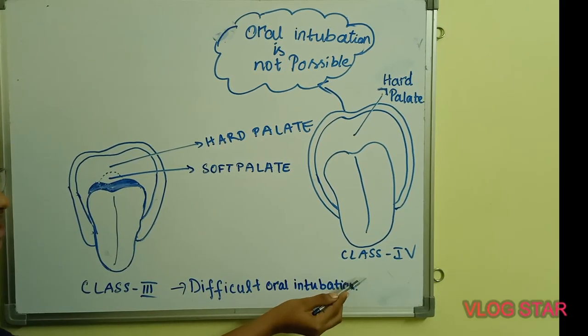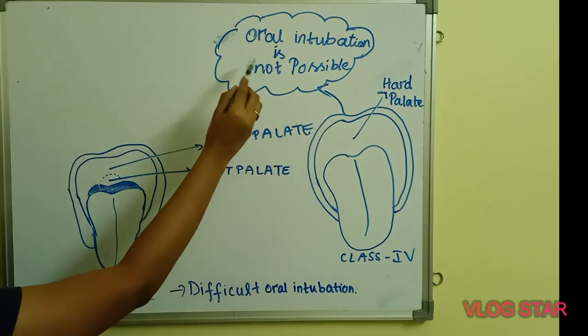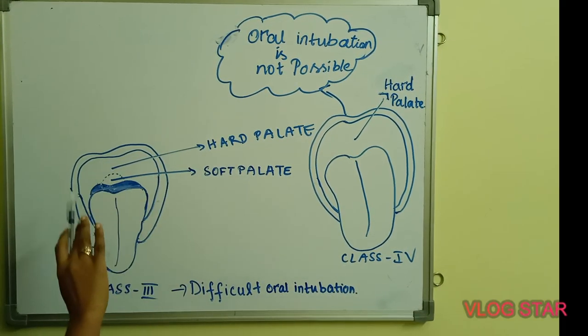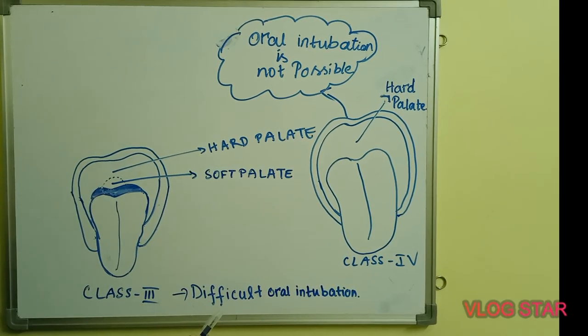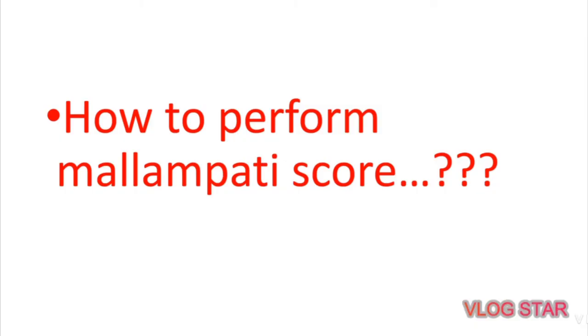When a patient is assessed as Mallampati Class 4, oral intubation is not at all possible. To perform the Mallampati score, the test is performed while the patient is in a sitting position, awake and cooperative.